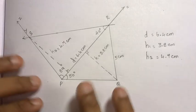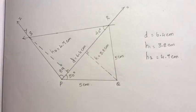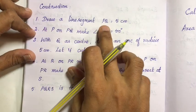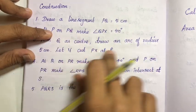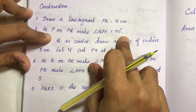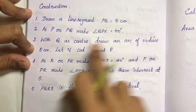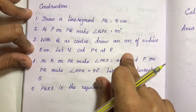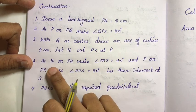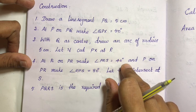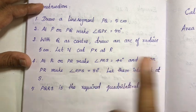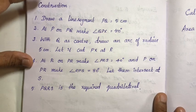Construction steps: First, draw line segment PQ equal to 5 cm. At P on PQ, make angle QPX equal to 50 degrees. With Q as center, draw an arc of radius 5 cm - let it cut PX at R. At R on PR, make angle PRS equal to 40 degrees. At P, make angle RPS equal to 80 degrees - let the rays intersect at S. So PQRS is the required quadrilateral.